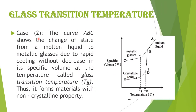Case 2: The curve ABC shows the change of state from molten liquid to metallic glasses due to rapid cooling — a sudden drop of temperature without decrease in specific volume — at the temperature called the glass transition temperature TG. Thus it forms a material with non-crystalline properties.